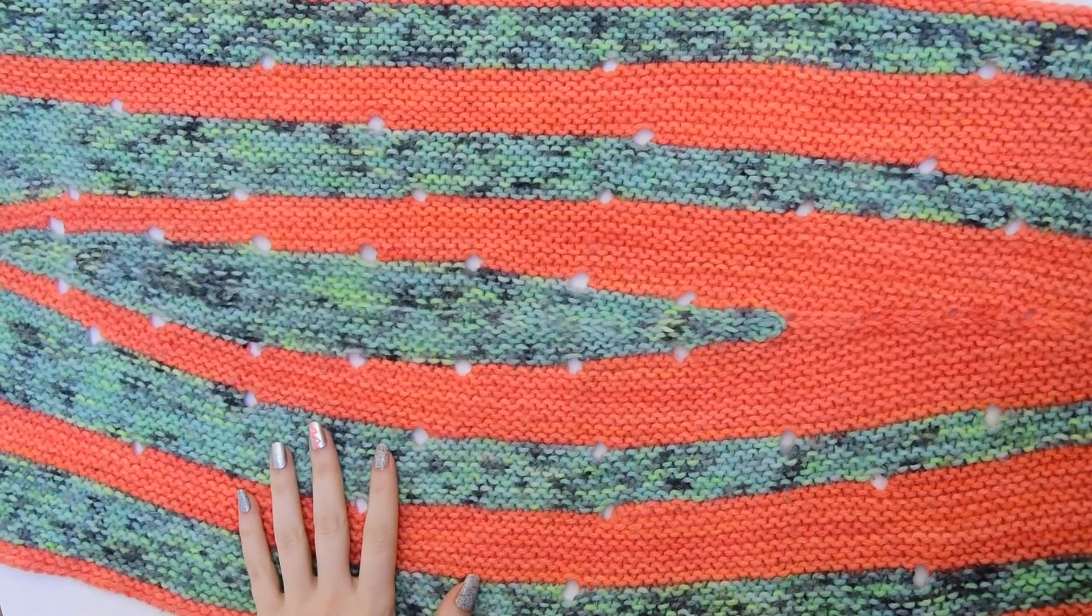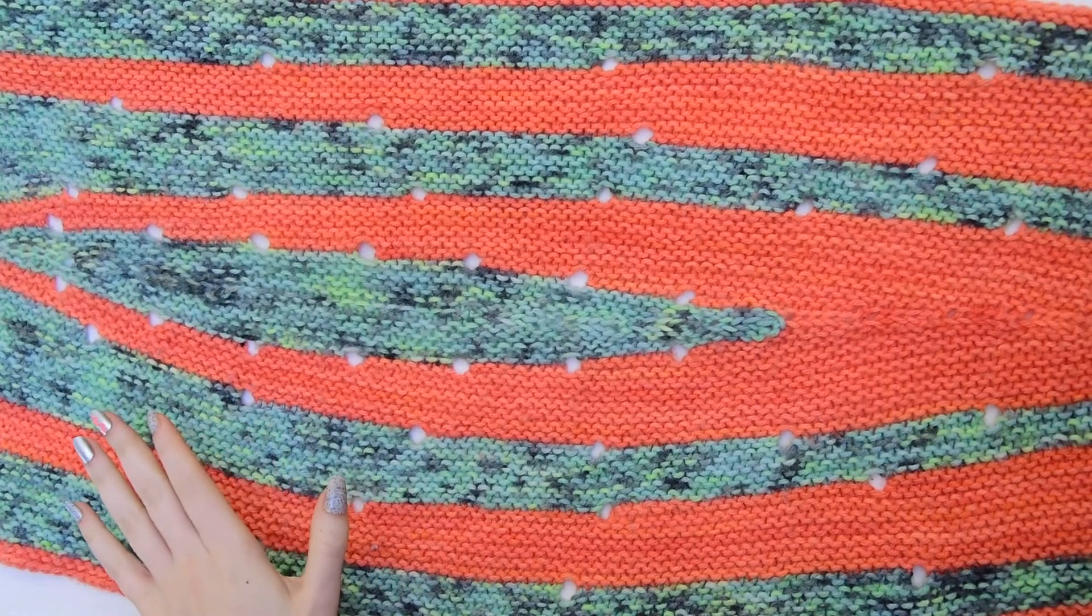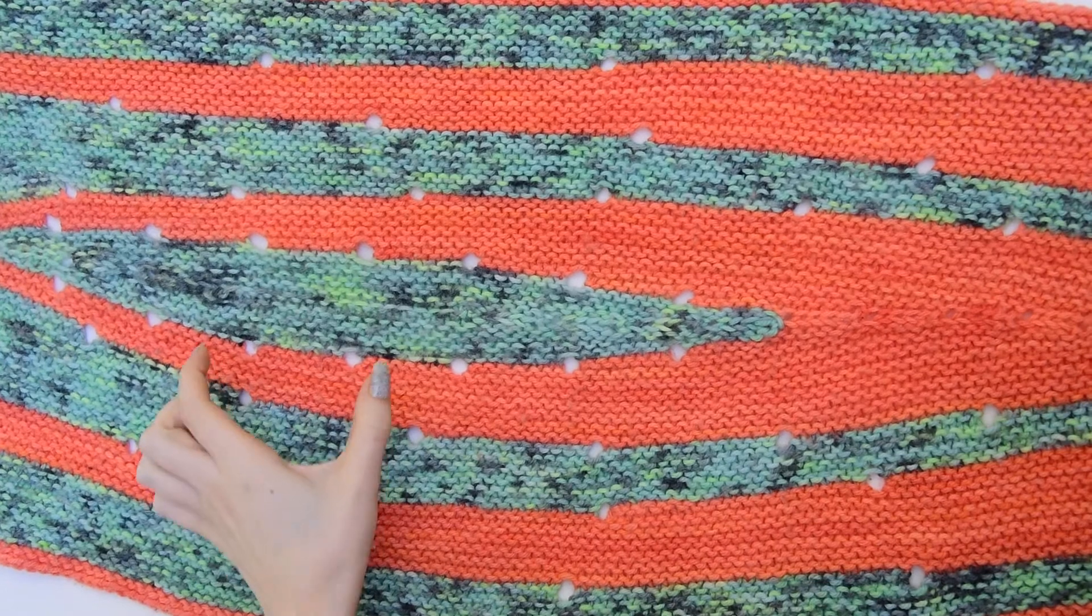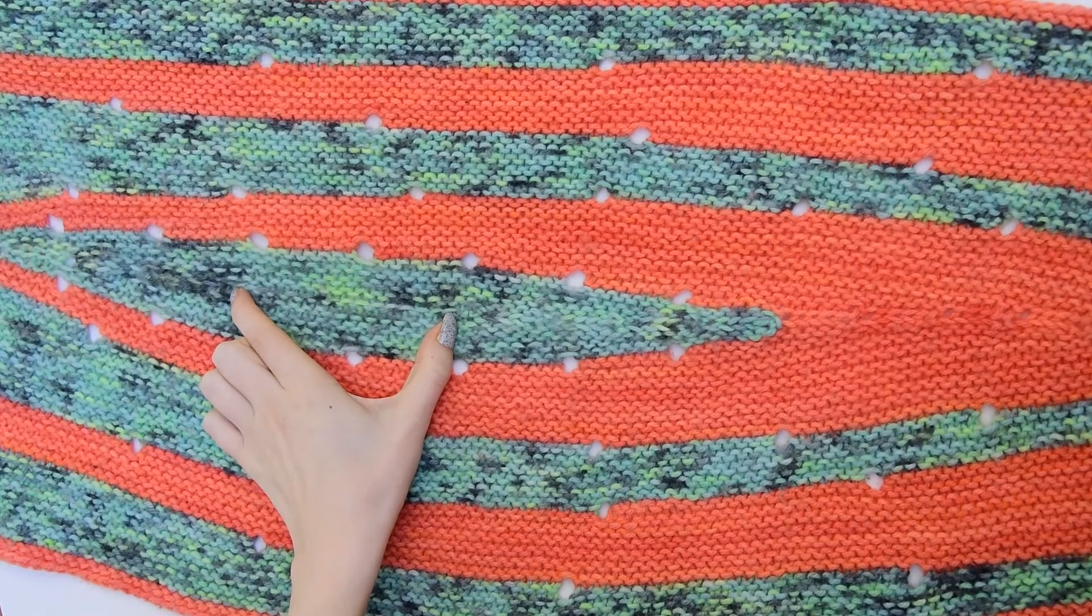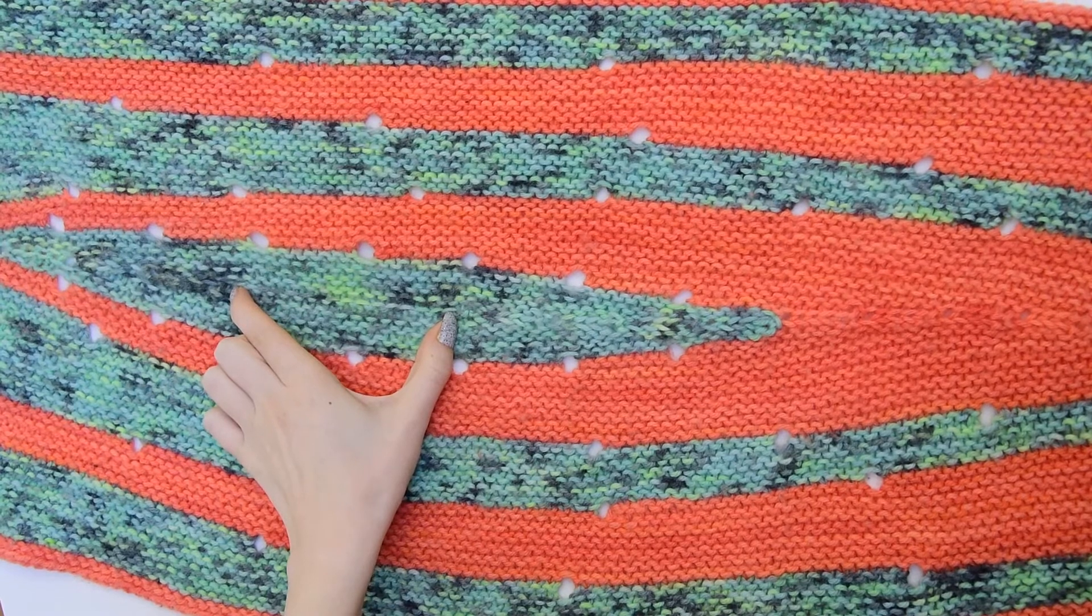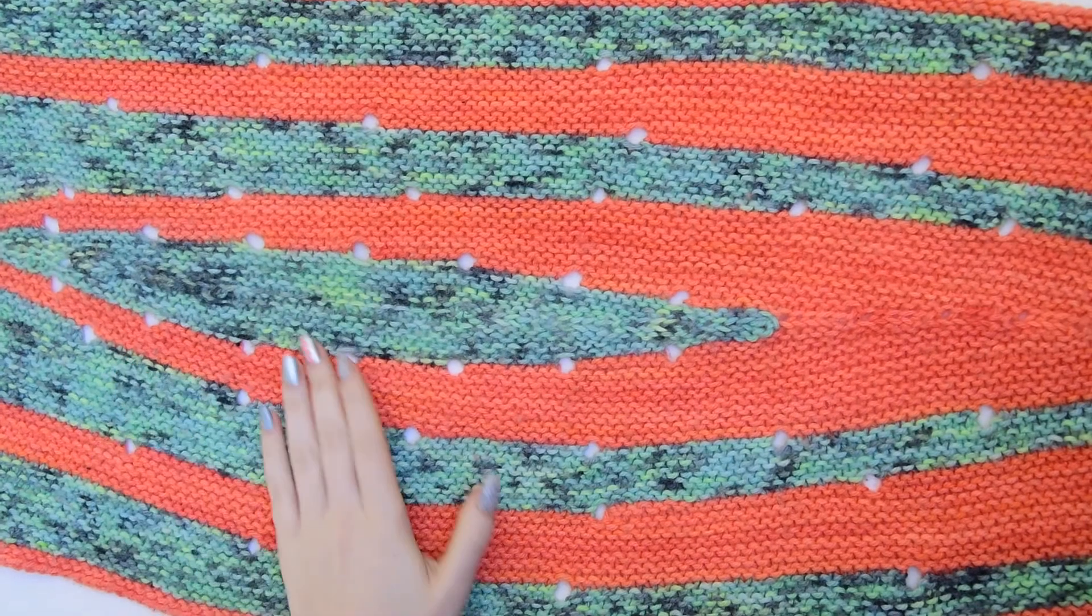This is my surfboard shawl, and it's a great example of a center out construction. My cast-on is right here. And in order to create the shape, I also used some stacked increases, short rows, and yarn overs.